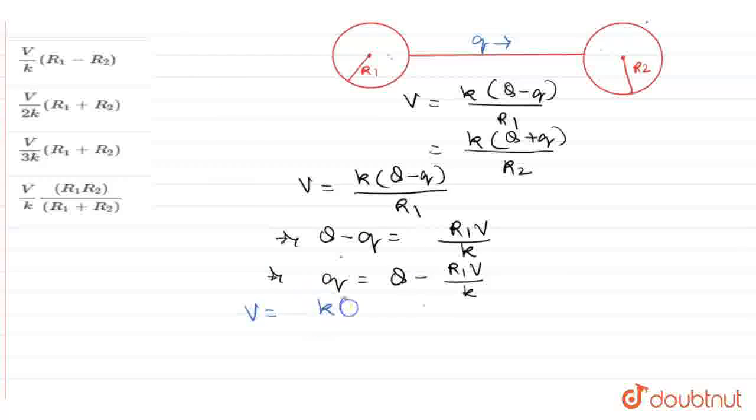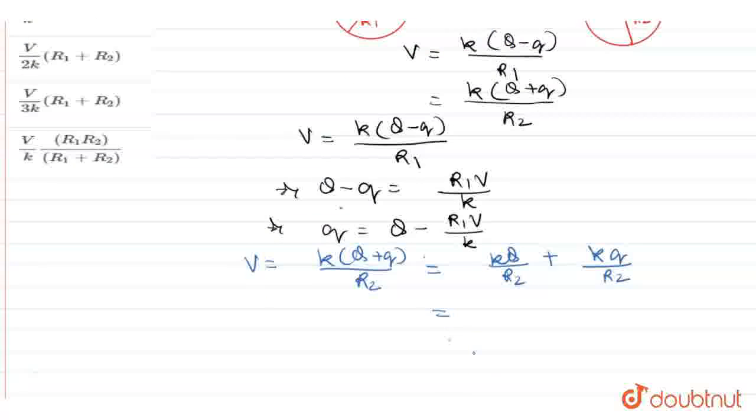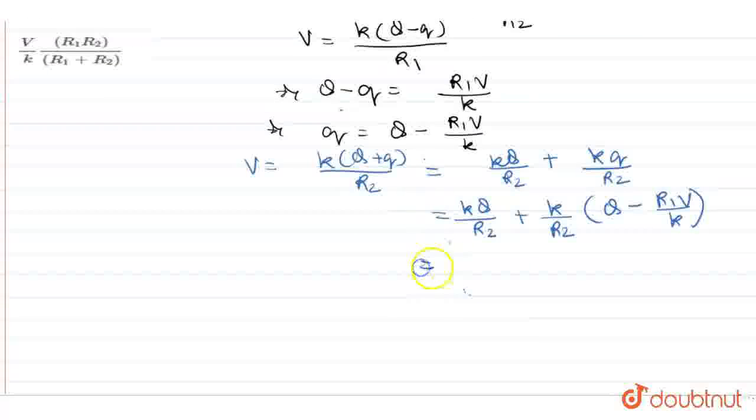That is V = k(Q + q)/R2. So we can write this as kQ/R2 + (k/R2) into (Q - R1V/k).